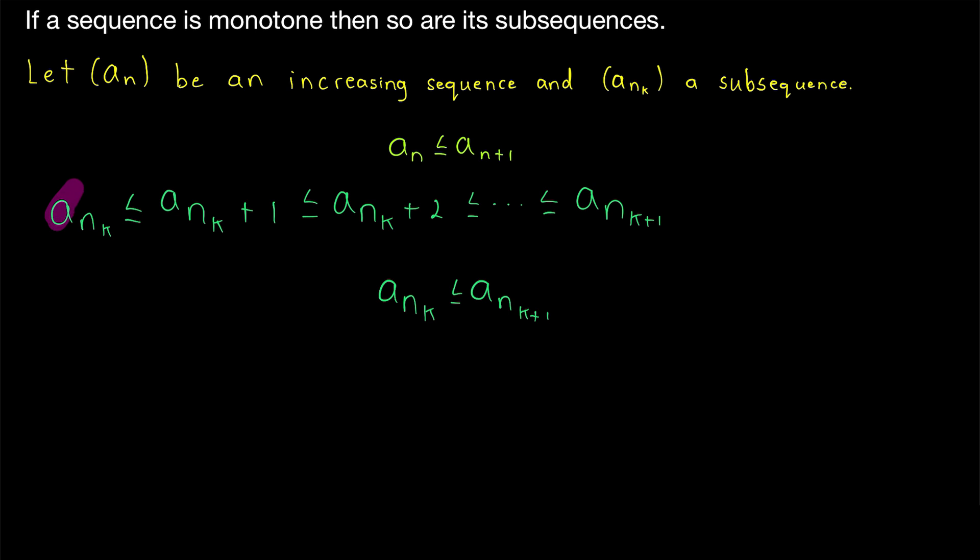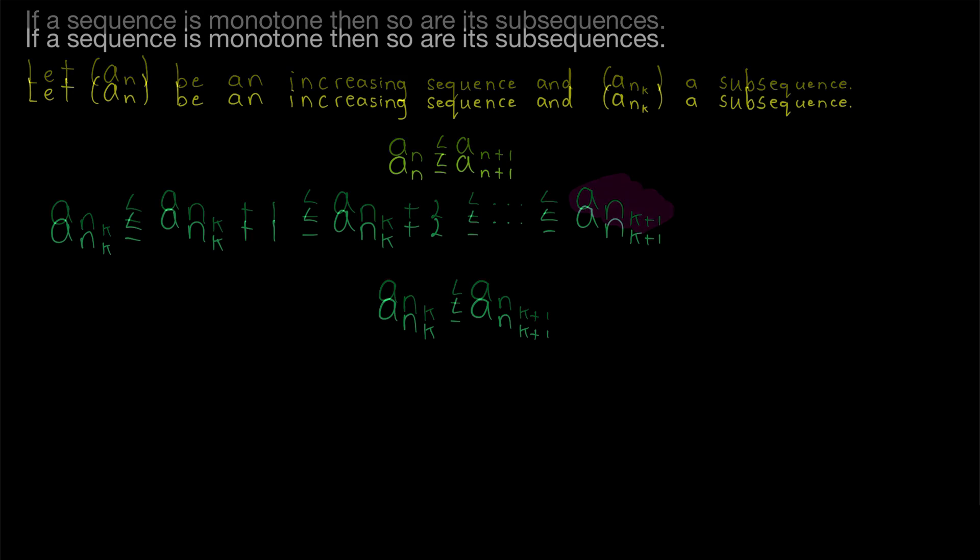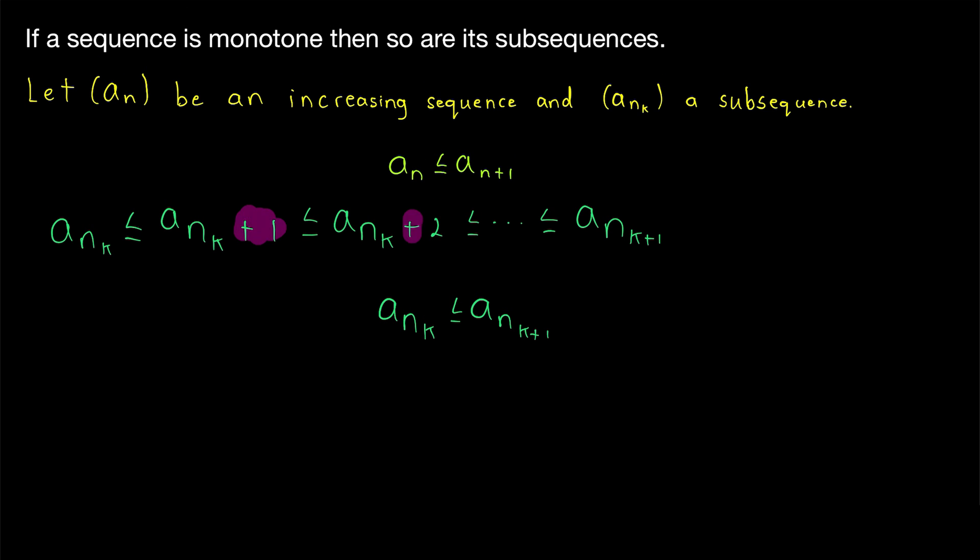So, remember, all we've done is taken an arbitrary term from the subsequence, and then using the fact that the original sequence is increasing, we have these less than or equal to relationships continuing up the original sequence until we arrive at the next term in the subsequence. Again, I want to point out that these plus ones and plus twos and so on are being added to nk, whereas this plus one is being added to k. But that's it. We've shown if we take a subsequence from an increasing sequence, any term of that subsequence will be less than or equal to the next term of the subsequence, and thus the subsequence is increasing.